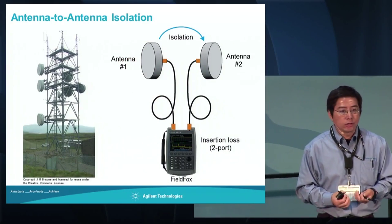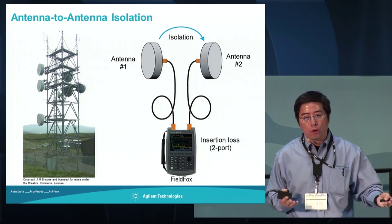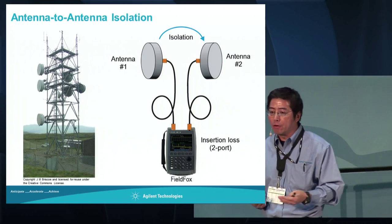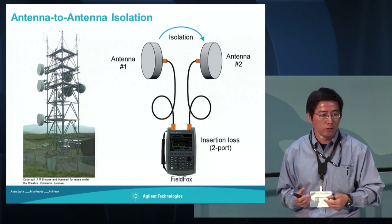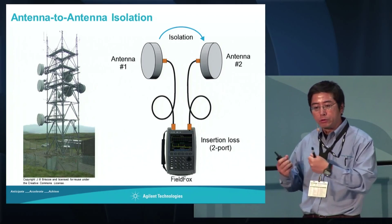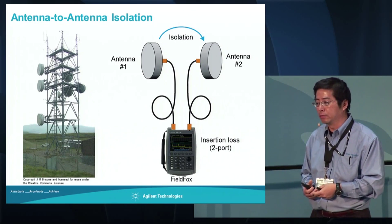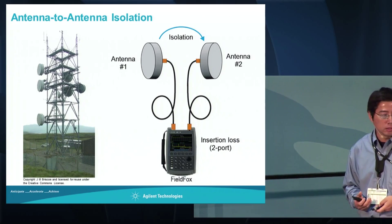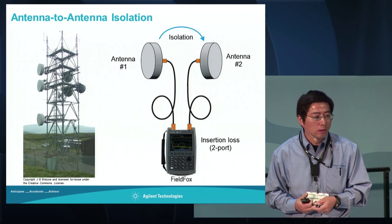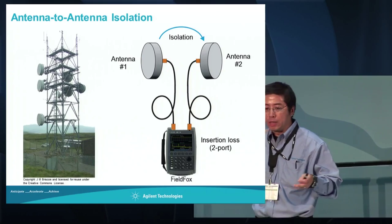Let's look at the first measurement: antenna isolation. Why is antenna isolation important? It's critical because real estate on towers is getting very limited. You have a lot of antennas next to each other, and they start to interfere with each other - especially when you're testing one antenna while other antennas are hot. The signal will couple to the antenna under test. In the industry, you also use a lot of repeaters. That's even more critical - if your repeater's two antennas require about 90 dB isolation and you're less than that, you create oscillation between the two antennas, raising the noise floor and potentially creating interference for the whole system.